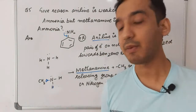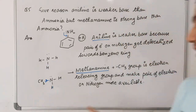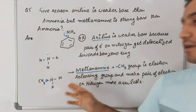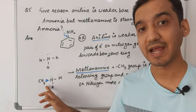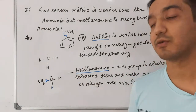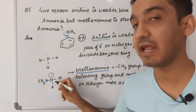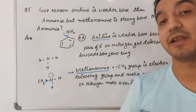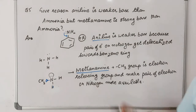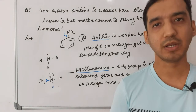For methylamine: the CH₃ group is an electron-releasing group and donates electrons toward the nitrogen. This increases the availability of electrons on nitrogen, making methylamine a stronger base than ammonia.